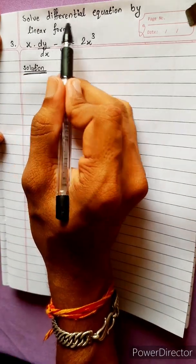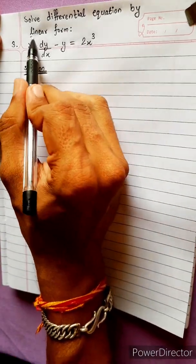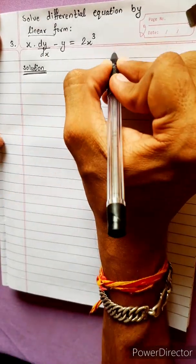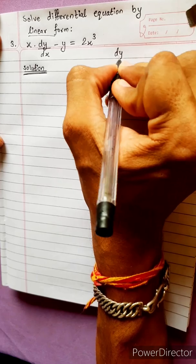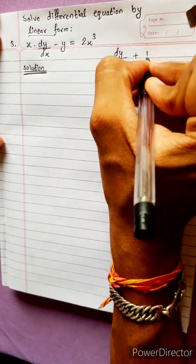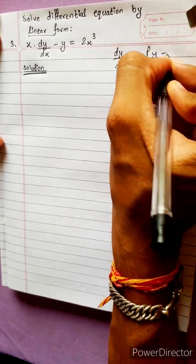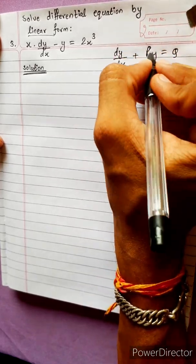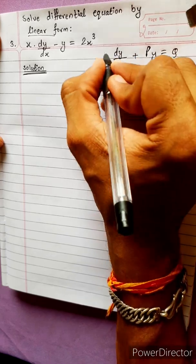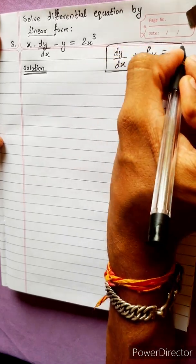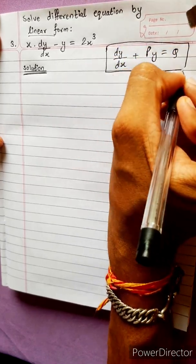Let's solve a differential equation by linear form. The linear form is dy/dx plus p·y equals q, where p and q are functions of x, or constants.